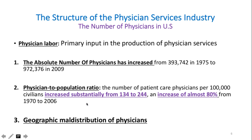The third dimension we must consider is the geographical distribution of physicians. What if physicians are more concentrated in one state than another? We have to look at all these indicators: absolute numbers, ratios, and geographic distribution.